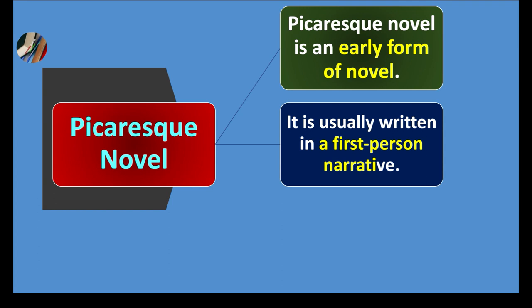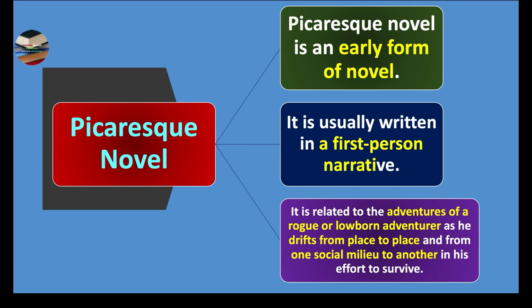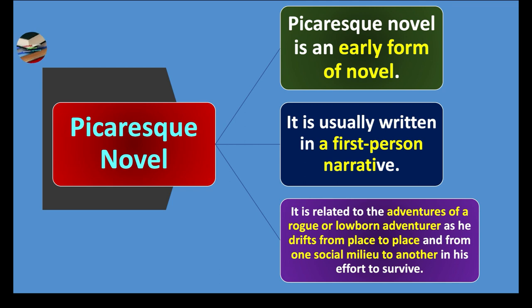It is usually written in a first person narrative — depicted in the first person like 'I' or 'we'. It is related to the adventures of a rogue or low-born adventurer as he drifts from place to place and from one social milieu to another in his effort to survive. Normally, the picaresque novel refers to the adventures of a rogue kind of person — a person whose social status is very low.